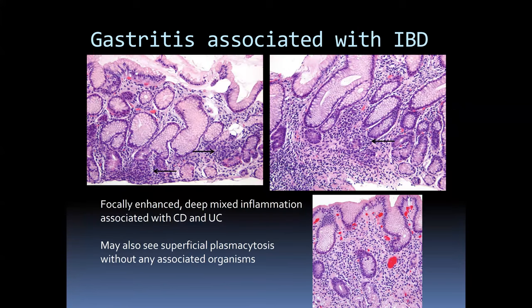There is also a more generalized milder gastritis associated with inflammatory bowel disease — just a little bit of chronic lymphocytic periglandular inflammation. It's very nonspecific, but in a patient with known IBD this sort of change would correspond to that. Plasmacytosis without organisms might be another clue for that diagnosis.